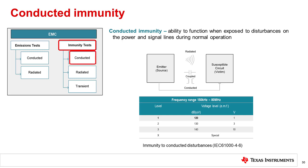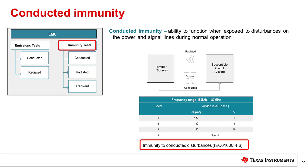Conducted immunity simulates the device's ability to function when exposed to disturbances on the power and signal lines during normal operation, when disturbances occur in the same power network or on shared power lines. Sources of disturbance for conducted immunity might be capacitive or inductive coupling, and disturbances are induced through an RF field defined by IEC 61000-4-6.